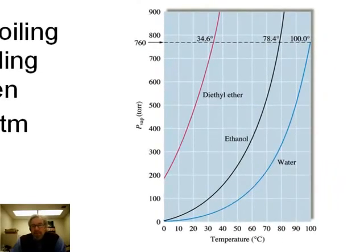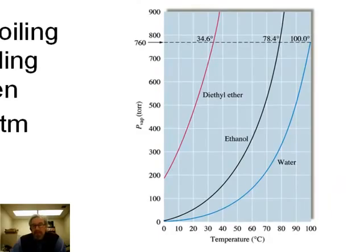So going back to this diagram that has three different substances on here, temperature versus vapor pressure, you may have noticed earlier that at 760 torr there was a dotted line over there. That's a special place because that's normal atmospheric pressure. And so if you look across this line, you can see that diethyl ether boils at 34.6 degrees C because vapor pressure for diethyl ether is at atmospheric pressure.